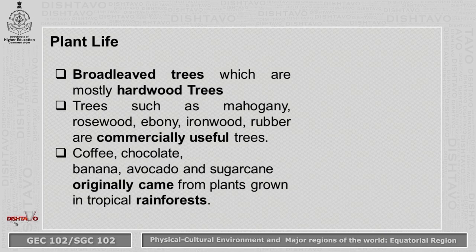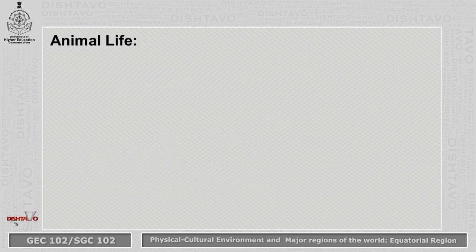Coffee, chocolate, banana, avocado, and sugarcane originally came from plants grown in the tropical forest region, which is the equatorial region.